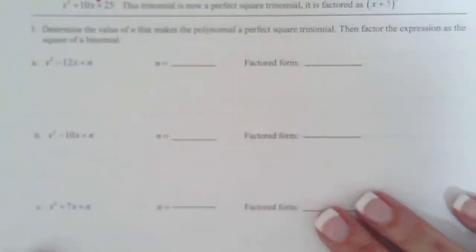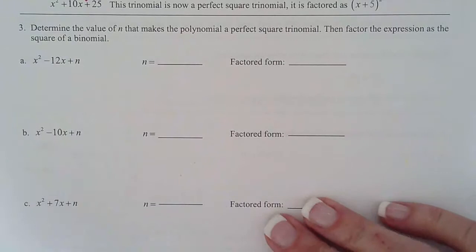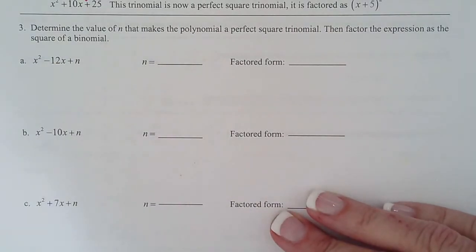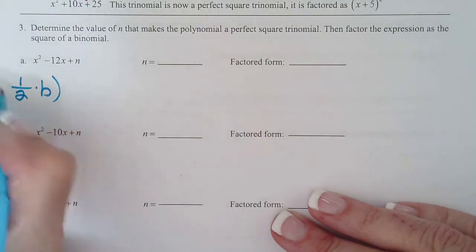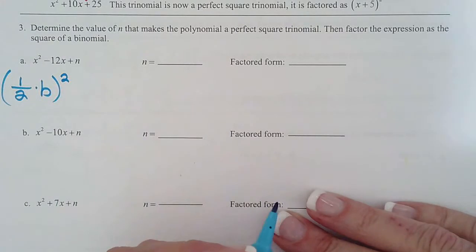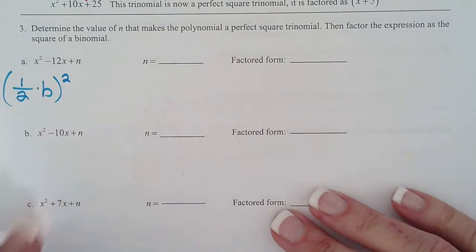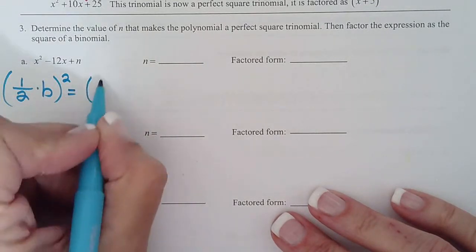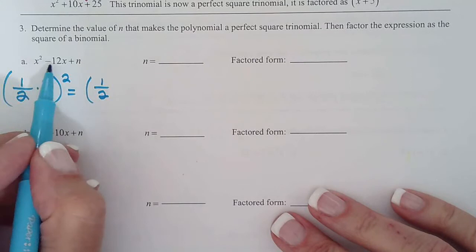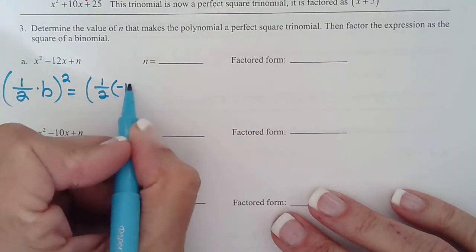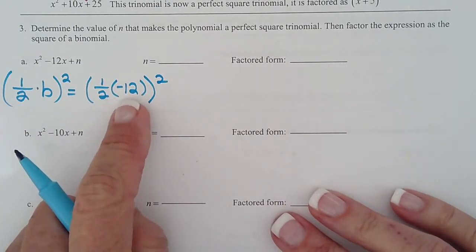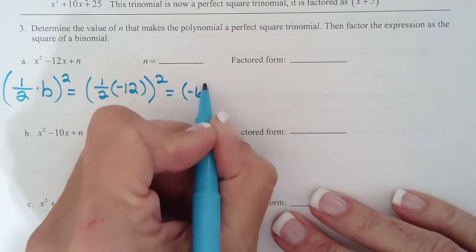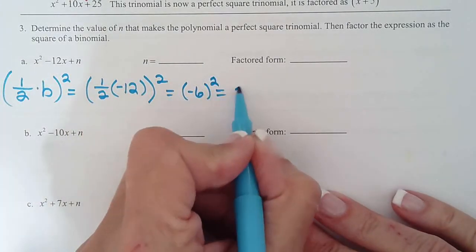Okay, so back to this. Determine the value of n that makes these a perfect square trinomial. The first thing I do is write the formula, half of b squared. So that way every time I write the formula I have it memorized by the end of the exercise. So half, and what is b? Negative 12. Then I need to square it. So what's half of negative 12? Negative 6. And when I square it, I get 36.